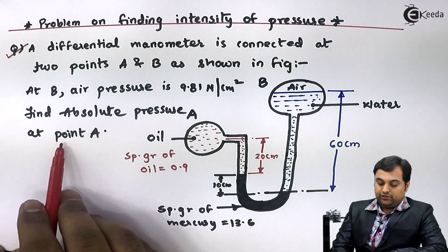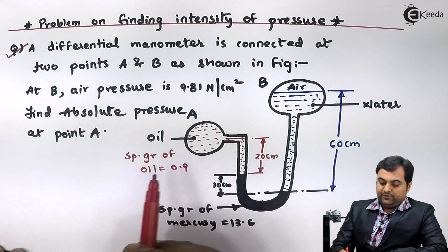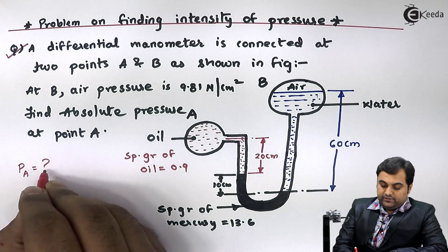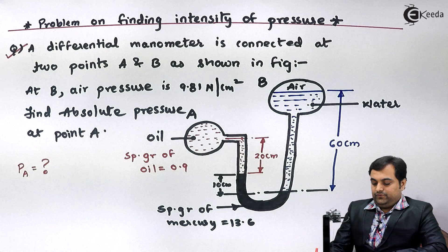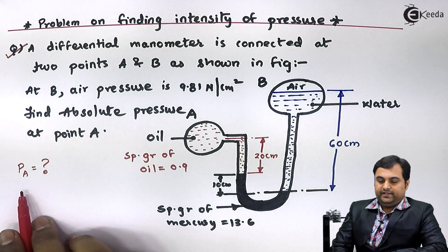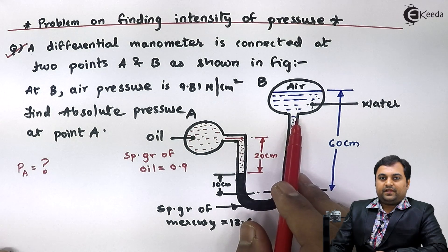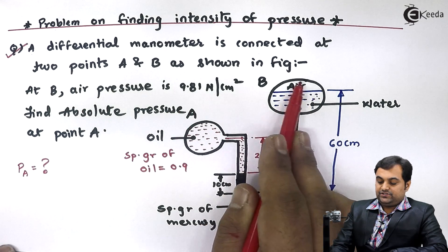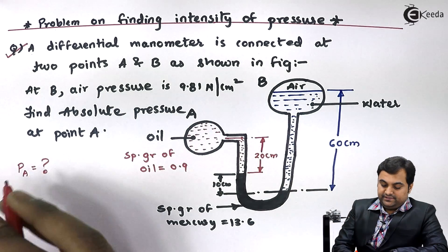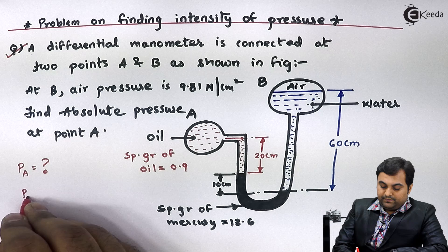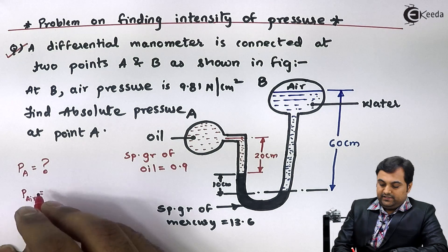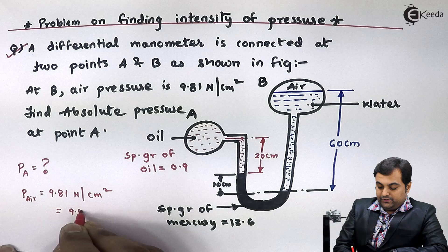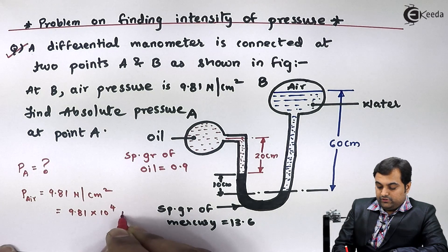The question is to find the absolute pressure at point A, which means we have to find the pressure of oil. The pressure of air on the right limb is given as P_air = 9.81 Newton per centimeter square, or equivalently 9.81 × 10⁴ Newton per meter square.